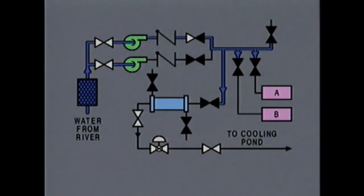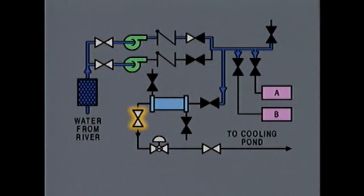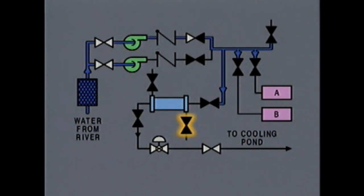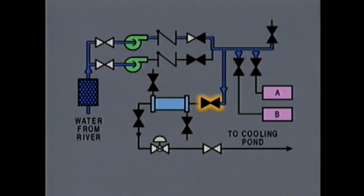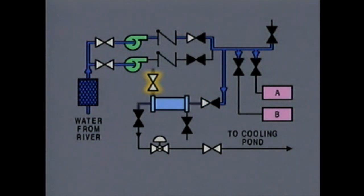Now the next step is to supply water to the lube oil cooler. First, the isolation valve in the oil cooler tube side outlet line is closed, and the tube side drain valve is checked to make sure it's closed. Then the tube side of the cooler can be filled by partially opening the inlet isolation valve and completely opening the vent valve. When water has completely filled the cooler, the vent valve is closed.